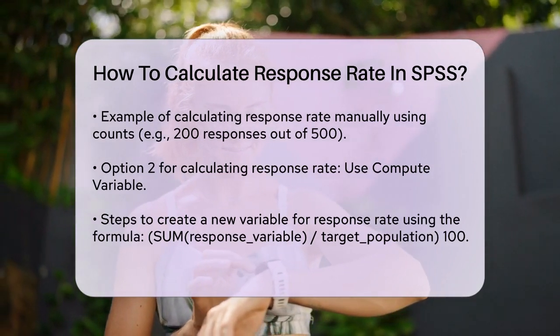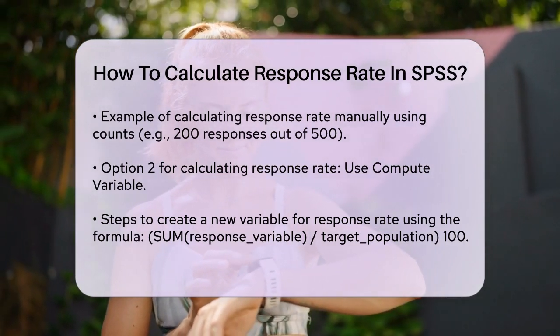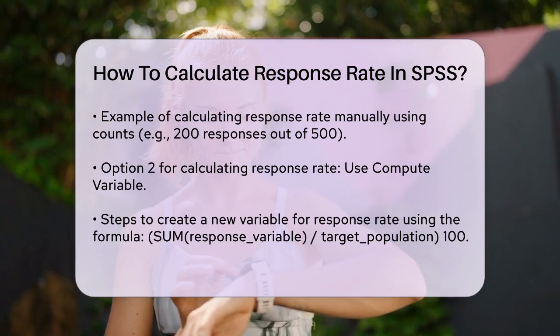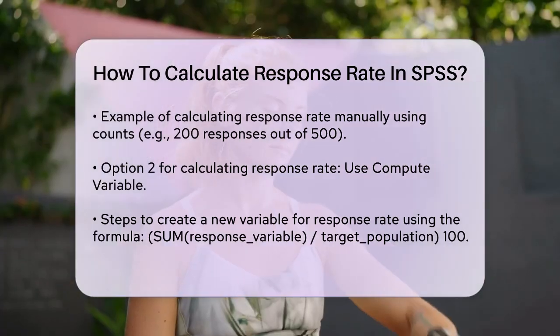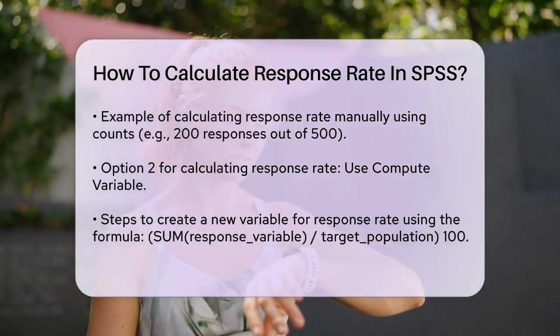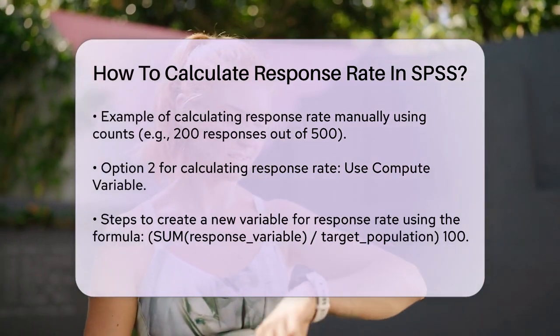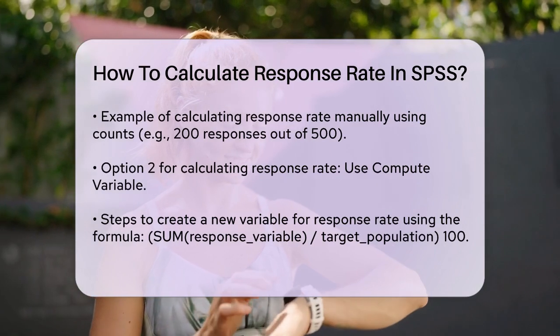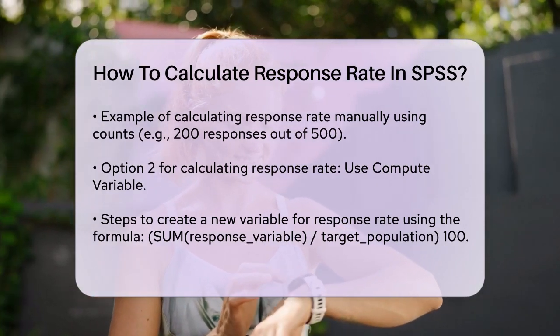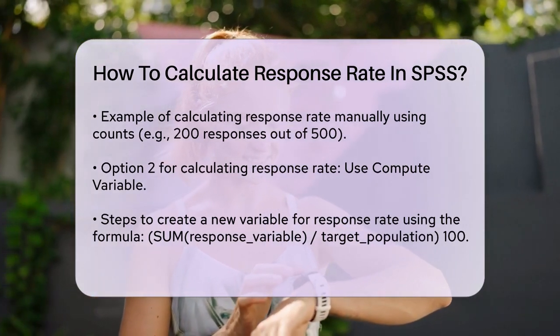For instance, if you had 200 responses out of 500 people, the formula would be: (200 / 500) * 100, which equals 40 percent.